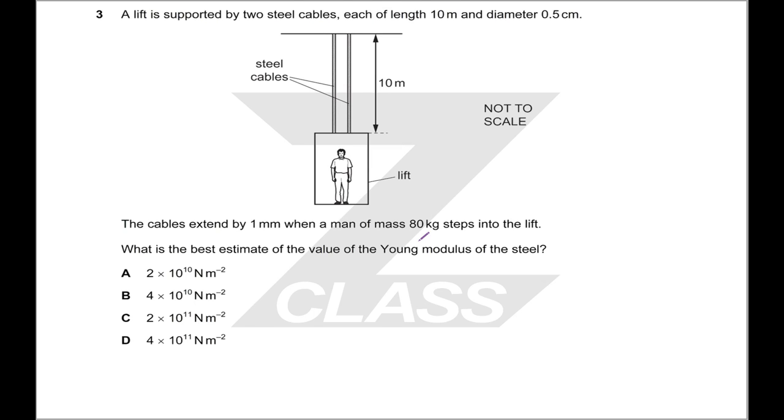A lift is supported by two steel cables. The cables extend by one millimeter when a mass of 80 kilograms is added. What is the best estimate of the value of the Young modulus? So Young's modulus is stress divided by strain, so stress is Young's modulus times the strain. You have the strain, you've got an extension and an original length. You have a mass which is a force that you are adding. And you can work out an area because you've got a diameter. So the area and the force, that gives you your stress, and then the length and the extension, that gives you your strain, and you can work out your Young's modulus from there.